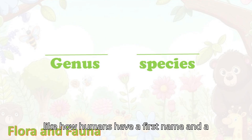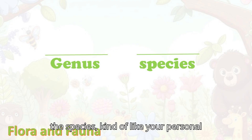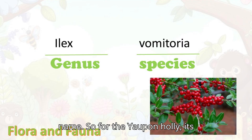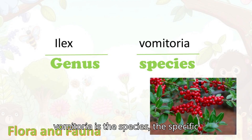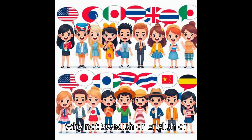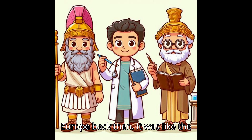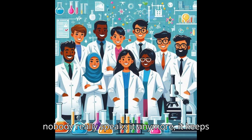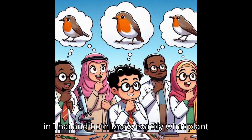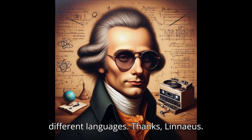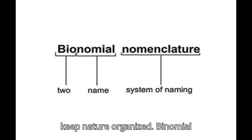Kind of like how humans have a first name and a last name — the first name is the genus, like your family name, the second is the species, like your personal name. So for the yaupon holly, its scientific name is Ilex vomitoria. Ilex is the genus — the holly family — and vomitoria is the species, the specific kind of holly. As for why Latin? Latin was the language scientists used in Europe back then — the universal science language. Even though nobody speaks it anymore, it keeps names consistent all over the world. Thanks, Linnaeus — you may have worn a giant wig, but you gave the world a brilliant system.